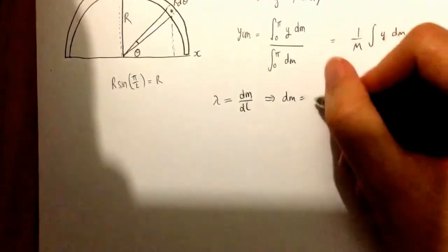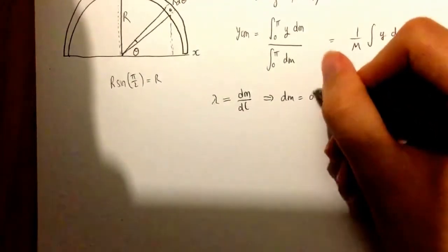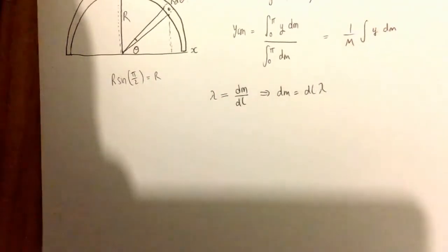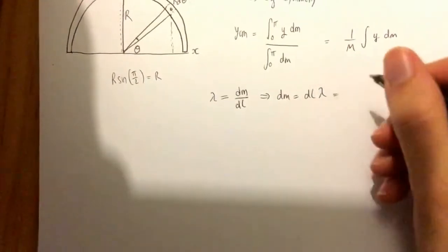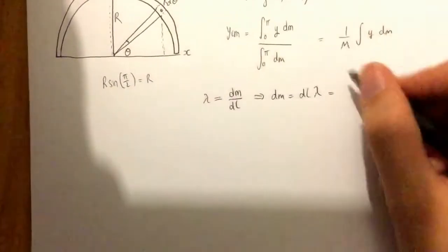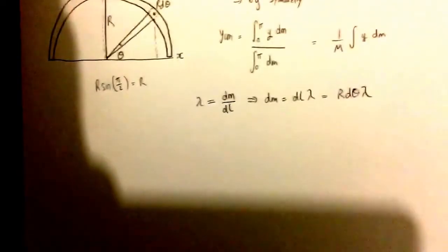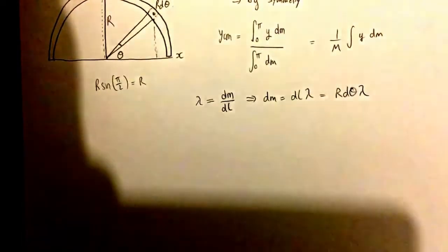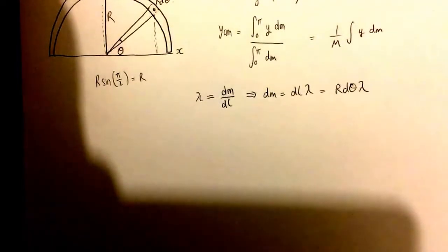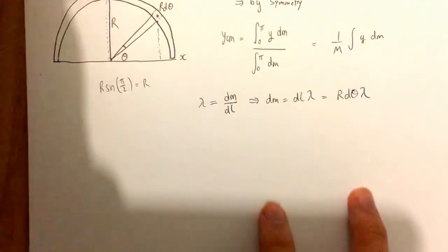So what this tells us is that dm, whenever we see that in that integral, that is really equivalent to just dl times lambda, just by rearranging there. And dl is just what we worked out, it's r d theta. So we end up with r d theta lambda as being the actual value for the differential mass.